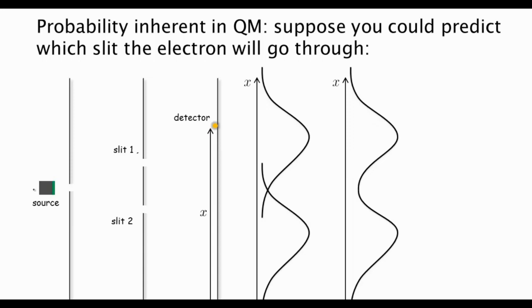So the fact that we do get an interference pattern tells us that there's no way of predicting which slit the electron went through. So somehow this probability is inherent in quantum mechanics. This fact that when you make a measurement, you get a random outcome. This is completely inherent in quantum mechanics. It's not a lack of knowledge. It's inherent.